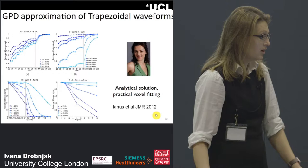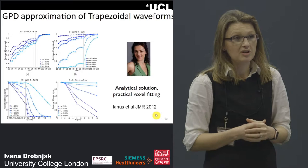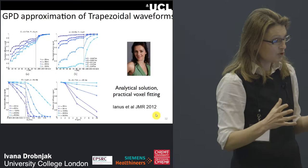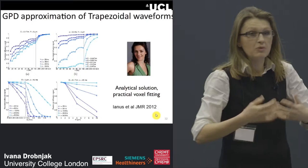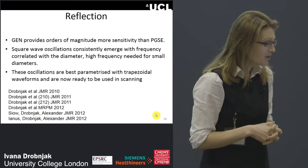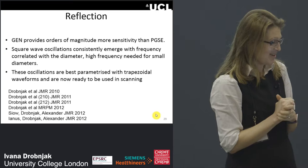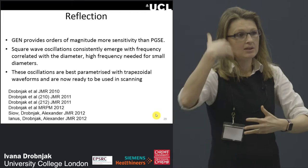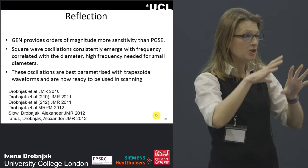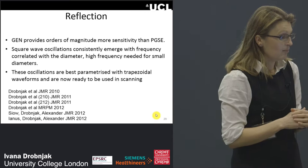I then moved to the next step: doing a GPD approximation of the waveform. A new PhD student, Andrade Janusz, joined the lab as a student of Danny Alexander and mine, and her first task was to perform this GPD approximation of the trapezoidal waveforms, giving us analytical solutions and enabling fast fitting across many voxels. This was three years of postdoc work, with publications in JMR, where Callaghan was editor and many similar papers from Shemesh, Stepisnik, and others were also appearing.